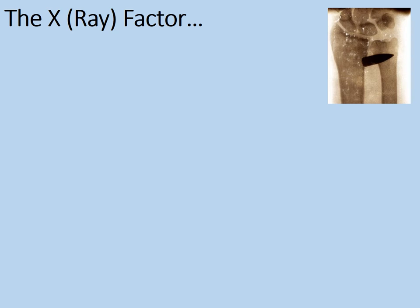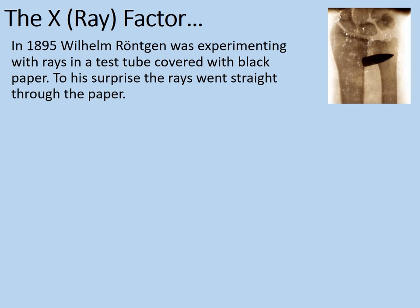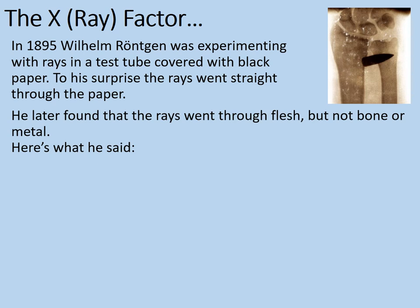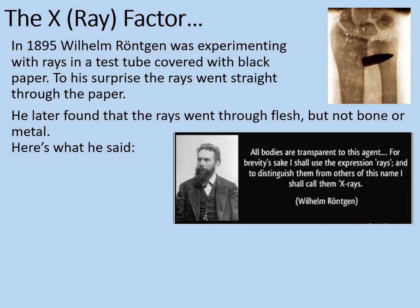Let's look at our next big development — the X-ray factor. In 1895, Willem Röntgen was experimenting with rays in a test tube covered with black paper. To his surprise, the rays went straight through the paper. He later found that the rays went through flesh too, but not bone or metal. Here's what he said: 'All bodies are transparent to this agent.' Soon x-rays were being used to diagnose broken bones, as they still are today.